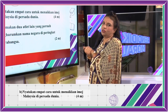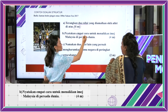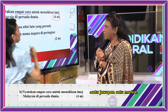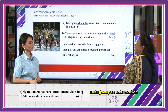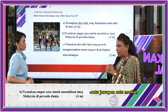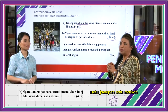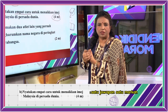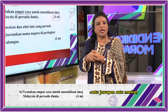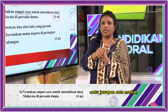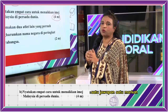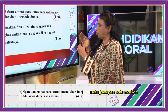Soalan B pula meminta empat cara, tetapi markahnya masih empat sahaja. Jadi satu ke satu — satu jawapan satu markah. Empat cara untuk menaikkan imej Malaysia di persada dunia. Banyak cara kita boleh menaikkan nama negara, contohnya berjaya dalam bidang sukan, menyertai pertandingan seperti jambori pengakap, mewakili negara sebagai duta kecil, atau menjadi dalam program pertukaran pelajar. Murid boleh menggunakan cara-cara daripada buku teks.